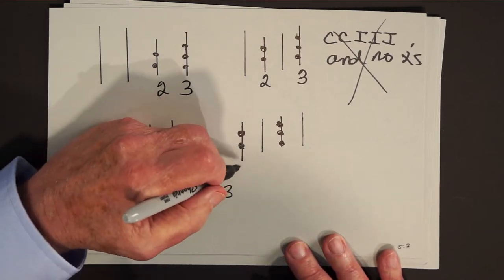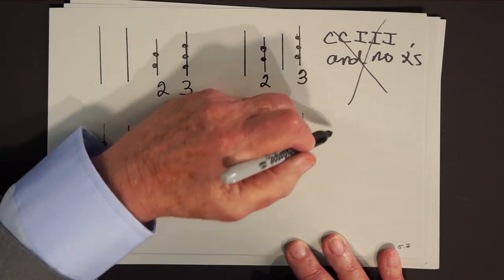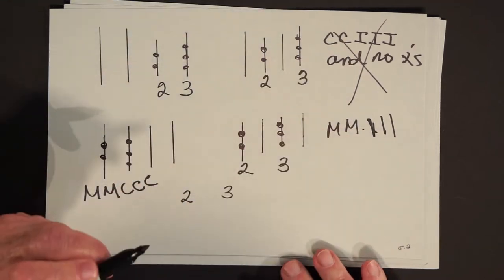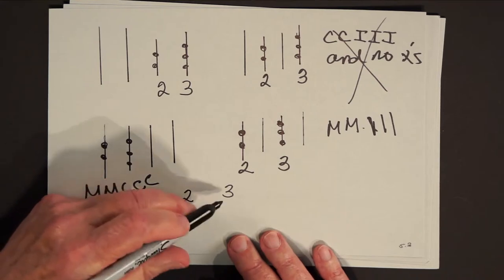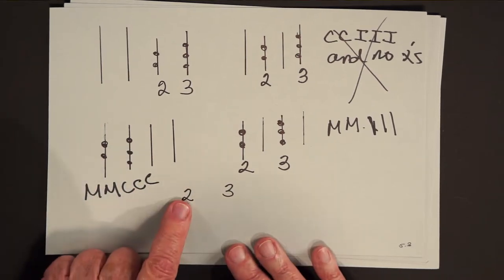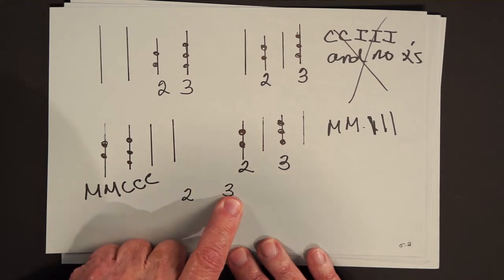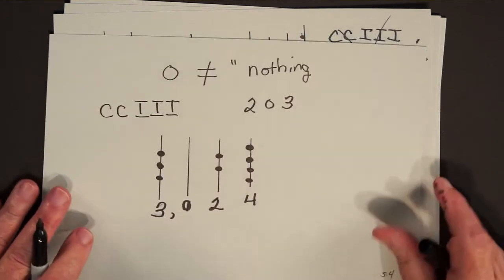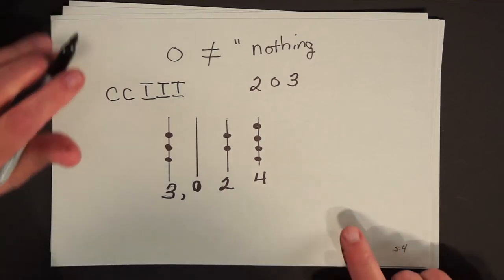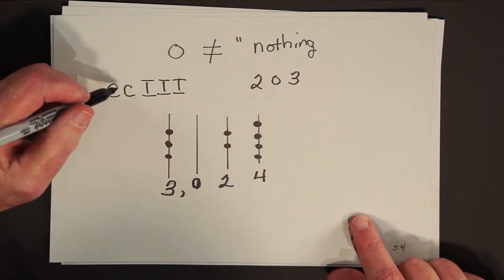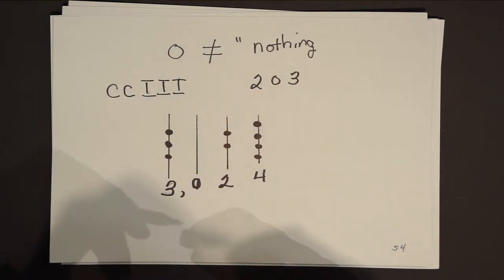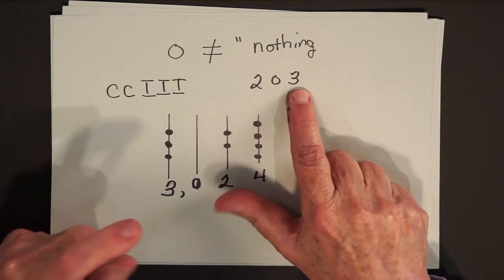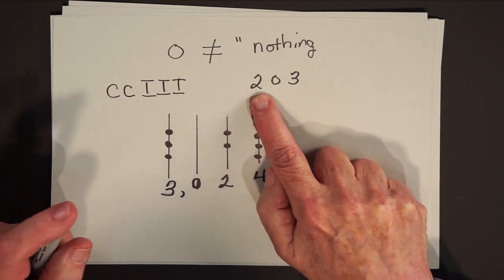But now if we leave the nouns out, all we see is a sequence of digits — two and three. We know we have two of a denomination and three of a denomination, but we don't know how many columns have been omitted. So what zero was — it's not nothing. Zero is a placeholder. It's the zero that tells us in place value that this number is 203: three in the ones column, none in the tens column, two in the hundreds column.